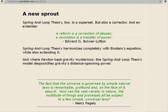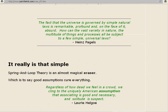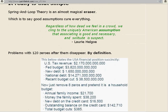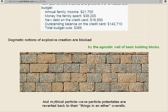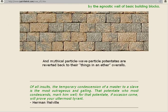It really is that simple. Spring and loop theory is an almost magical eraser, which is to say, good assumptions cure everything. Regardless of how dead we feel in a crowd, we cling to the uniquely American assumption that associating is good and necessary, and solitude is suspect. Laurie Helgoe. Problems with 120 zeros after them disappear, by definition. Dogmatic notions of explosive creation are blocked by the agnostic wall of basic building blocks. And mythical particle-wave particle potentates are reverted back to their things in an ether overalls. Of all insults, the temporary condescension of a master to a slave is the most outrageous and galling. That potentate who most condescends, mark him well. For that potentate, if occasion come, will prove your uttermost tyrant. Herman Melville.